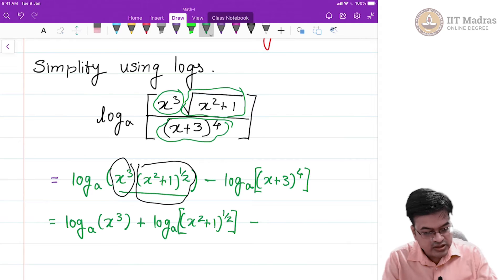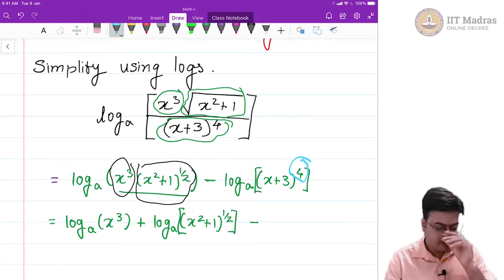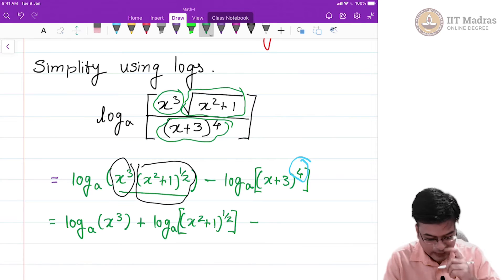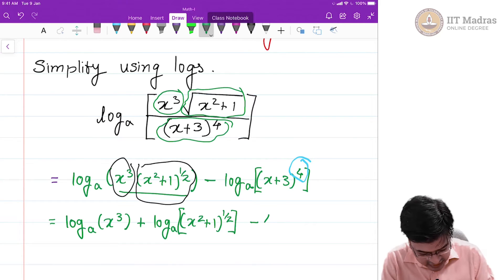Now in this term something is raised to the power 4, do I have any rule for indices of the law indices within the argument of logarithm? Yes, we have just now proved it for set of natural numbers. You can use this rule and say that this is equal to minus 4 times log to the base a of x plus 3.